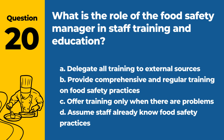Question 20. What is the role of the food safety manager in staff training and education? A. Delegate all training to external sources. B. Provide comprehensive and regular training on food safety practices. C. Offer training only when there are problems. D. Assume staff already know food safety practices. Answer: B. The food safety manager should ensure staff receive thorough and regular training to maintain high standards of food safety.